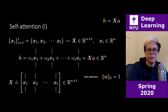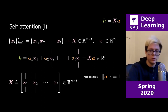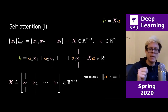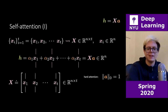Now for hard attention: if we impose that the zero-norm of vector a equals one and the non-zero term also equals one, then a is a one-hot encoded vector. If you multiply X by a one-hot vector, you select one specific column — wherever the one is. So if the second element of a is 1 and all others are 0, you retrieve the second column of X. Hard attention pays attention to exactly one element of your set.